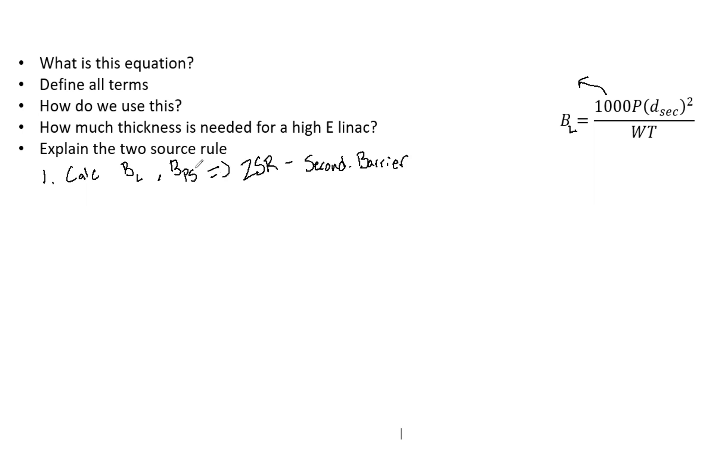So again, we need scatter and leakage. Combine those in the two source rule. That is how we're going to find our secondary barrier. So ultimately, here what we are going to do is find B. We're going to find BL. We're going to plug all the numbers in to actually find the number for that transmission factor.